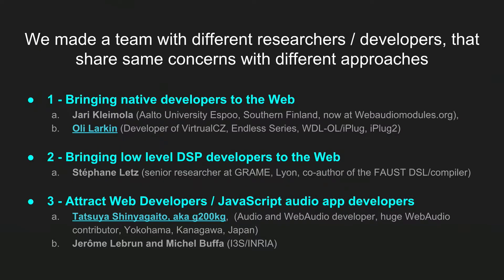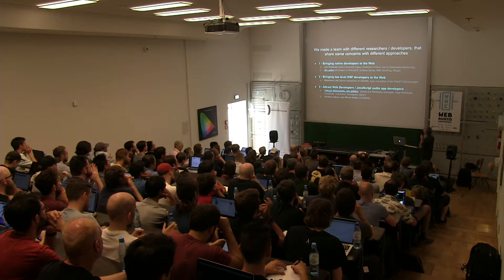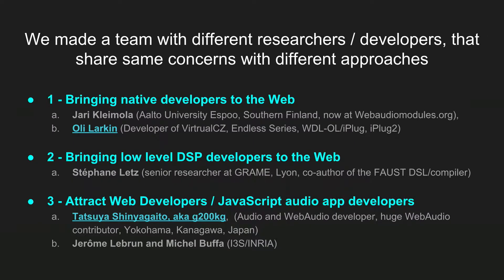We built a team with different backgrounds. Jari and Oliver Larkin were coming from the native world with a goal to help port existing plug-ins, or help native developers bring new plug-ins to the web. Stéphane Letts, co-author of Faust, was more on the DSL side — domain-specific languages that could compile low-level, sample-accurate DSP code. On my team, we were developing mainly using standard JavaScript nodes for a national resource project — audio effects, guitar tube-amp simulators. We also had contributions by G200KG, a sort of Japanese guru in the web audio scene, who helped port some of his synths as proof of concept.